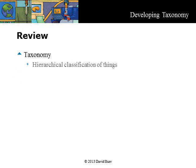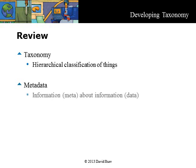In Part 1, we discovered the difference between taxonomy and metadata. Taxonomy is a hierarchical classification of things in which a content object can only be placed in one node. Metadata, in contrast, is a flat model of information associated with the content, sometimes externally and sometimes internally. A title, for example, is internal metadata, and a good content management system will extract this rather than requiring you to key it into a form.